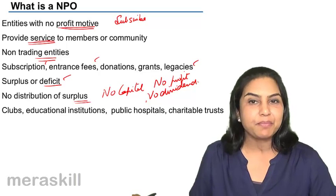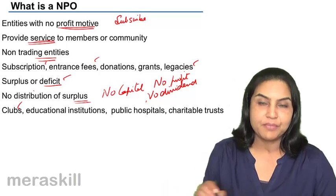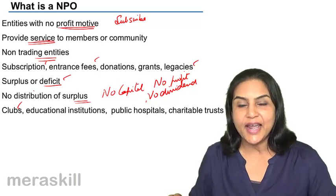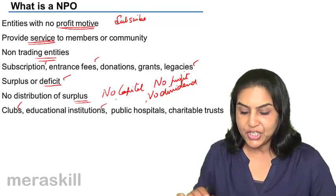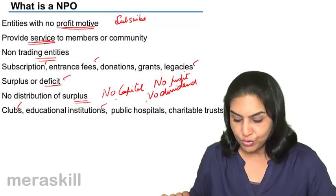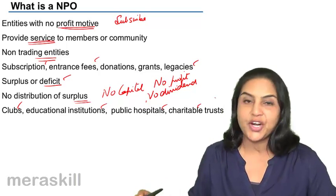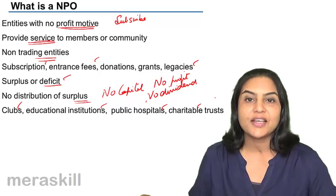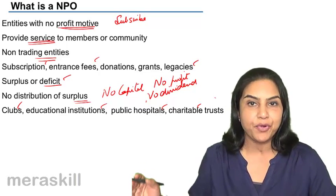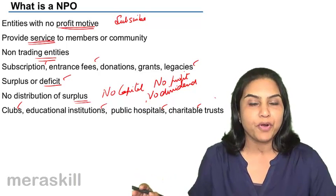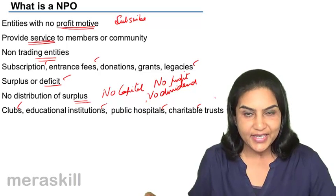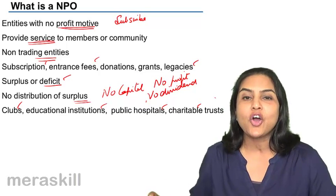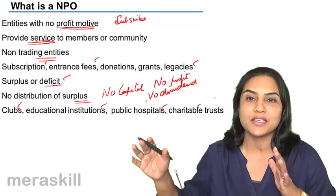Examples of not-for-profit organizations include clubs (such as a sports club where people meet, interact, and play games), educational institutions, public schools, public hospitals, and charitable trusts. A not-for-profit organization is a separate legal and accounting entity, created with no profit motive, not a trading entity, but created to provide service to its members or to a certain section of the community.